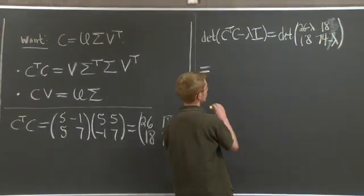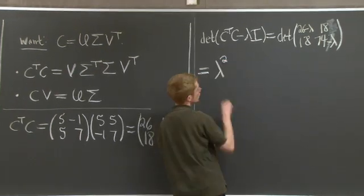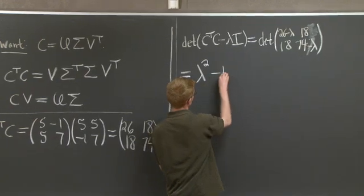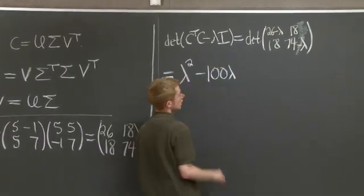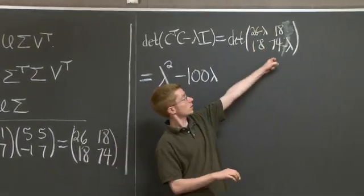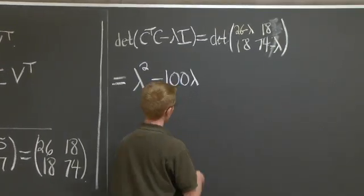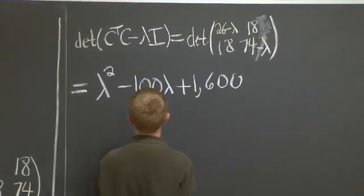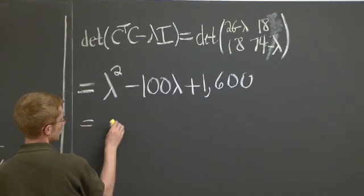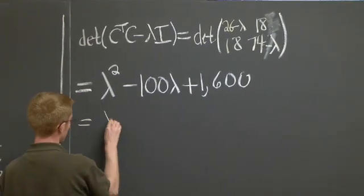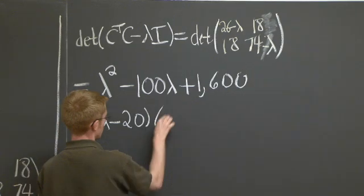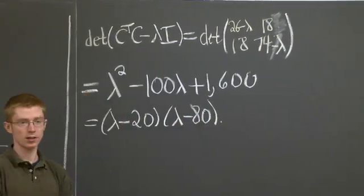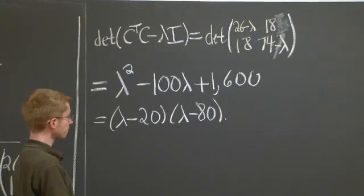And what is that polynomial? We get lambda squared. Note that 26 plus 74 is 100, so minus 100 lambda. And I'll let you do 26 times 74 minus 18 squared on your own, but you'll see you get 1,600. And this easily factors as lambda minus 20 times lambda minus 80. So the eigenvalues are 20 and 80.